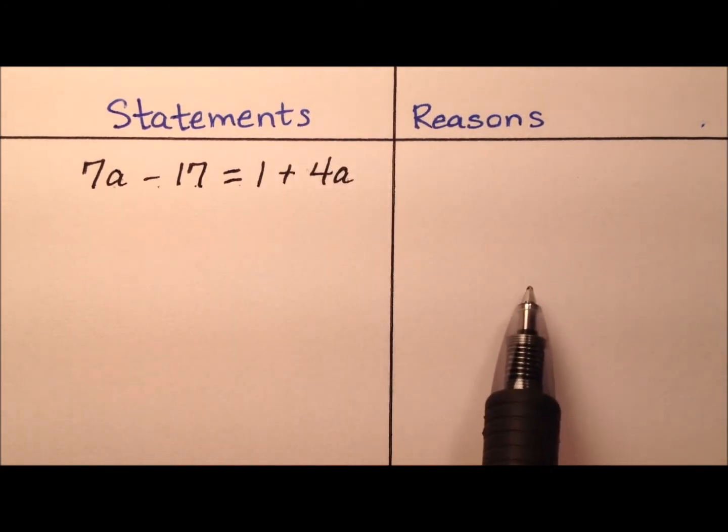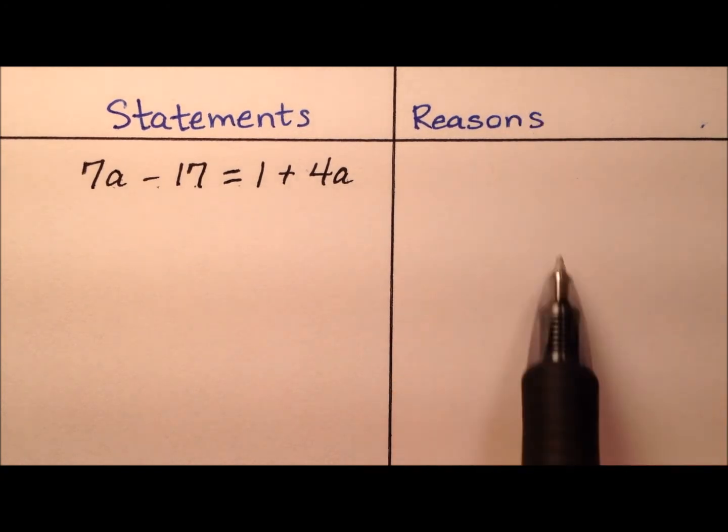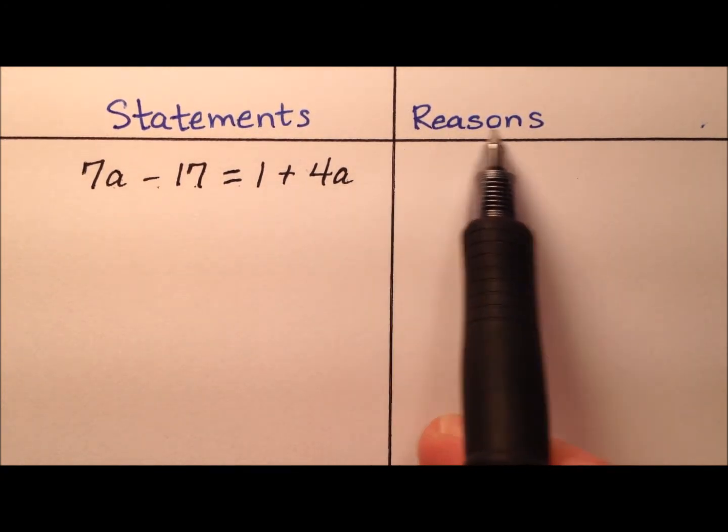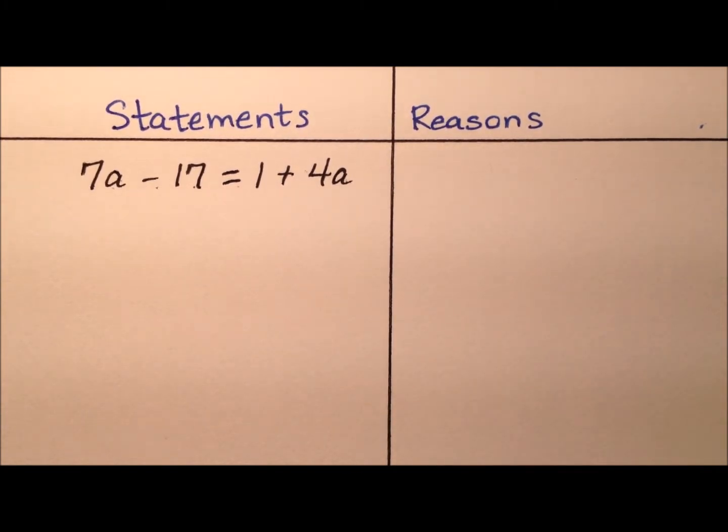We're going to include here a two-column algebraic proof that will work step by step along with the solution for this equation. Over here on the right column you'll see we have reasons, so we're going to give a justification for every single step that we take. This is a great way to prepare you for the more rigorous proofs that you're going to do in geometry.